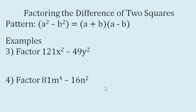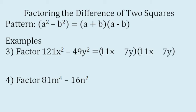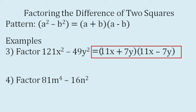Example number three. Factor 121x squared minus 49y squared. Again, there are two binomial factors. The square root of 121x squared is 11x, and the square root of 49y squared is 7y. Then we will just place plus and minus signs. So these are the factors: the quantity 11x plus 7y times the quantity 11x minus 7y.